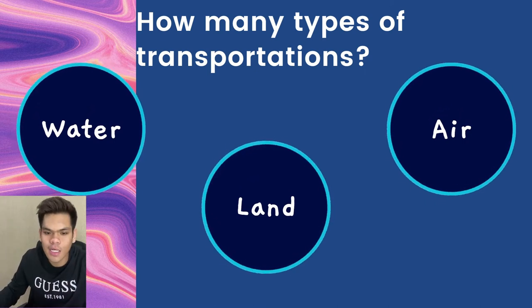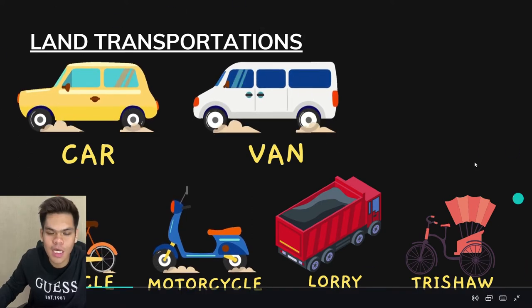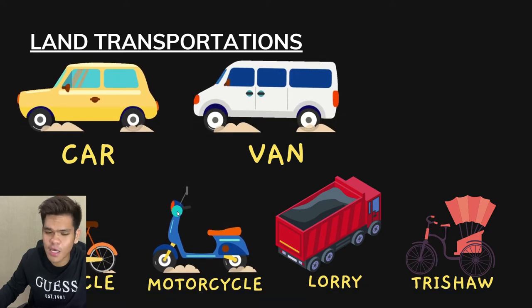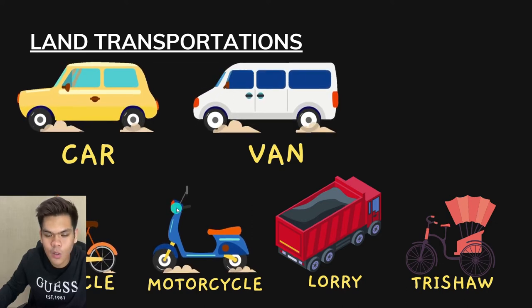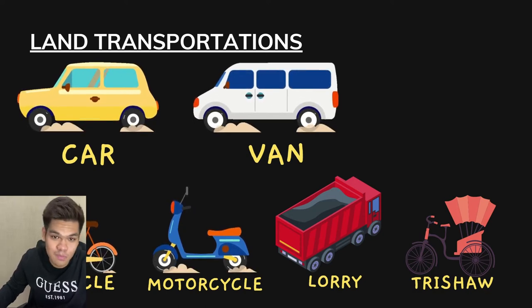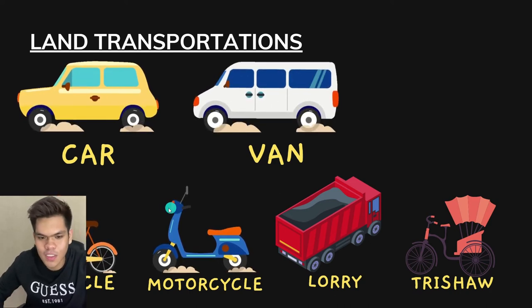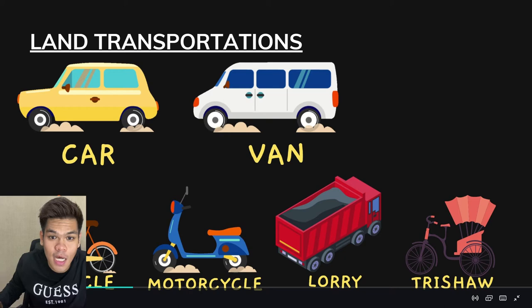Let's look at land transportation first — pengangkutan darat. These are the examples of land transportation. I think these are very familiar; we see them everywhere on the road and most of your parents also have them at home. We have: car, van, bicycle, motorcycle, lorry, and trishaw. These are common transports that we always see. These are all land transportation — pengangkutan darat.